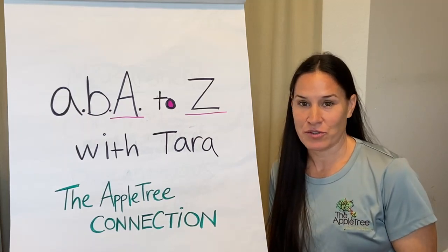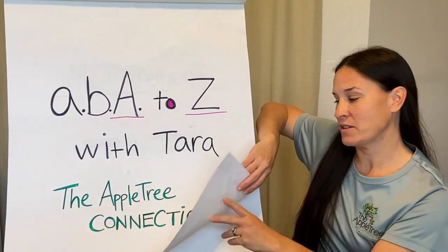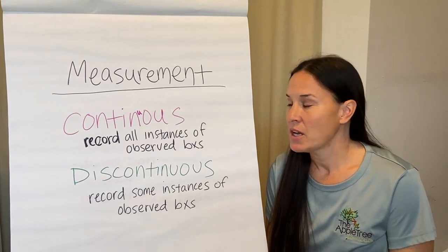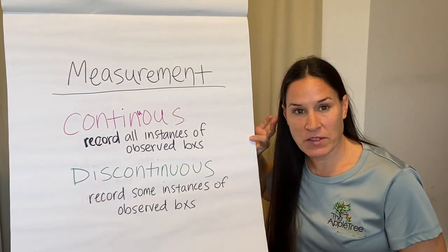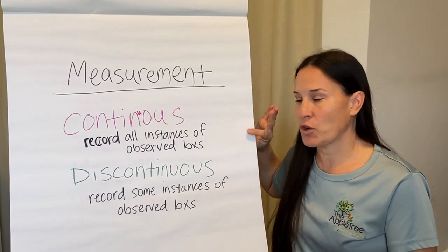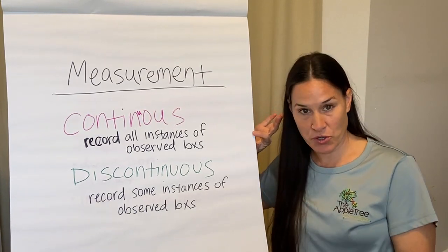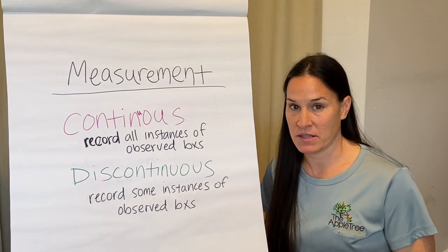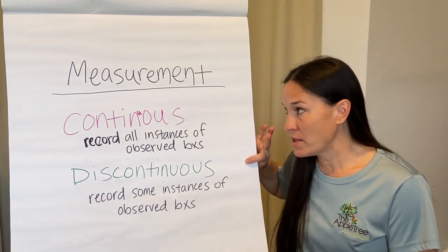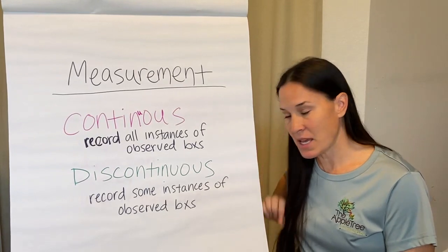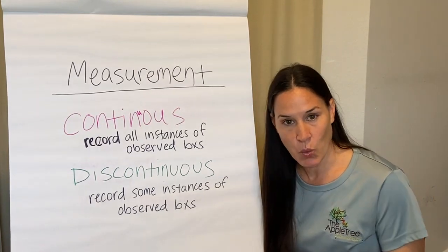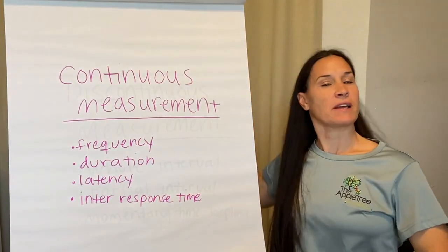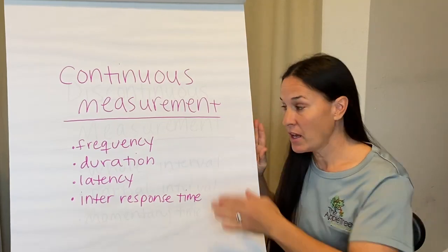So without further ado, today's topic is measurement — specifically continuous and discontinuous measurement. I always like to keep it as simple as possible to start. Continuous is when we record all instances of observed behaviors — keep that in mind, we're talking about when we are with our clients. Discontinuous measurement is when we record some instances of observed behaviors when we are with our client.